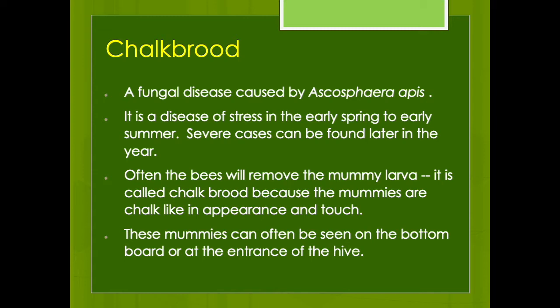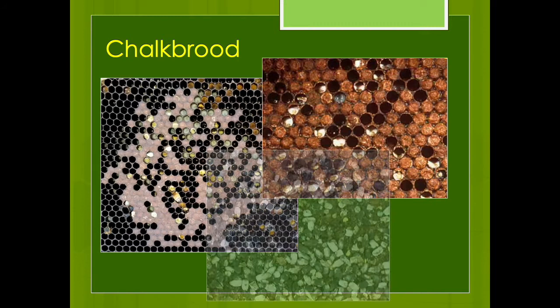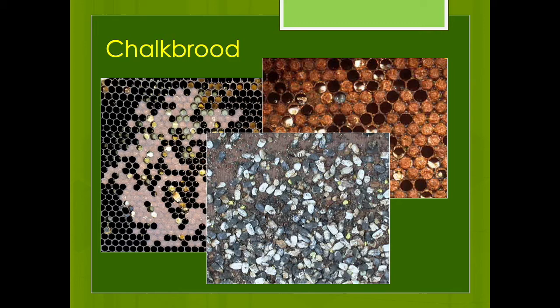Chalk brood is a fungal disease caused by Ascosphaera apis. It usually is a disease of stress, typically occurring in early spring and early summer, often during rainy or cold weather. It's fairly easy to diagnose because you'll see these mummies that look like chalk. The bees will remove them — sometimes you'll see them in the cells of the hive. Usually they're not severe enough to cause the hive to die, but they can weaken the colony as it loses a lot of brood during these times.